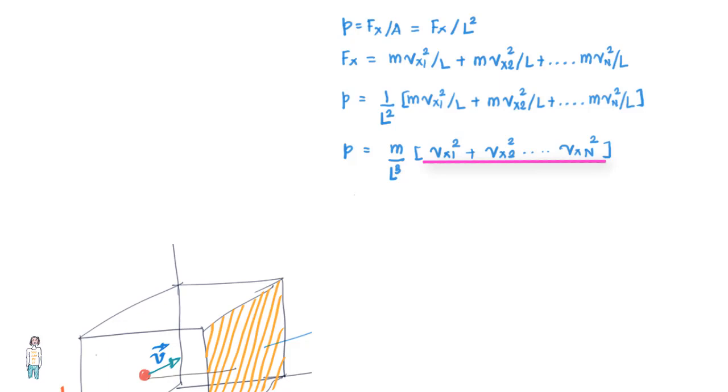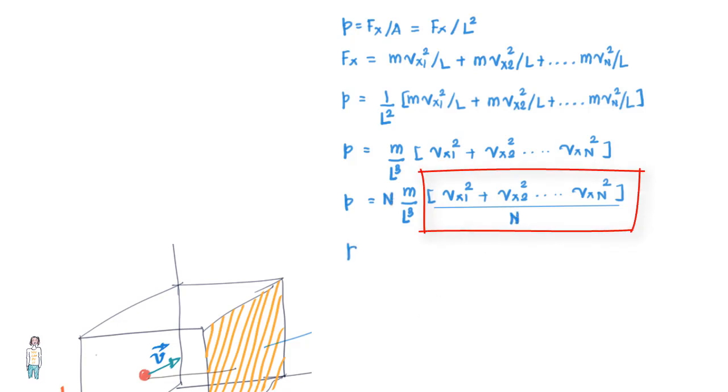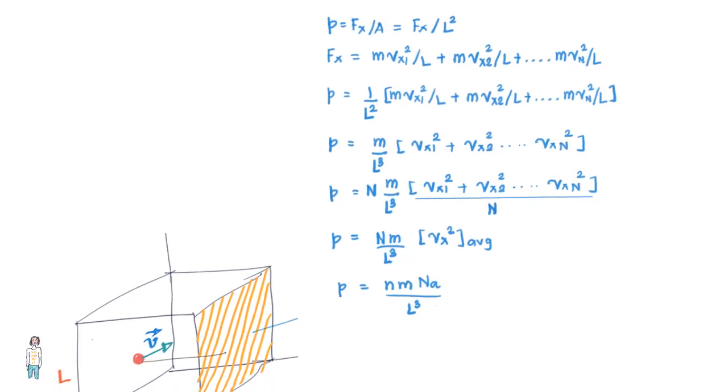If we divide and multiply with n here, this part of the formula is then nothing but the average of the square of the velocity. Let's call this vx squared average, which is the average value of the square of the x components of all the molecular speeds. So let us write p as nm divided by L cubed into vx squared average. Now since N is equal to small n into Avogadro's number, we rewrite the equation as p equals nmNA divided by L cubed into vx squared average.